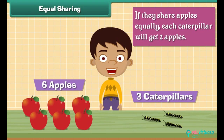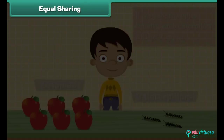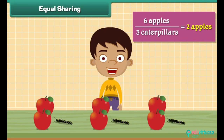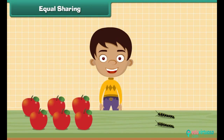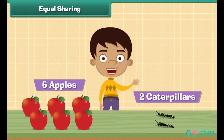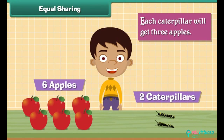Equal sharing: here are six apples and three caterpillars. If they share apples equally, each caterpillar will get two apples. Six apples divided into three caterpillars equals two apples each. If there are six apples and two caterpillars, each caterpillar will get three apples.